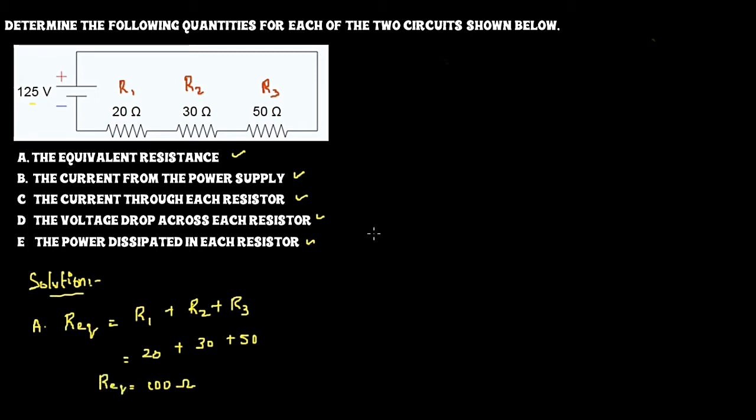The second one is the current from the power supply, the total current. That is from the power supply which is the ratio of the voltage and the total resistance, the voltage V divided by the total resistance R equivalent. So voltage given as 125 volts divided by 100 ohm gives you 1.25 ampere.